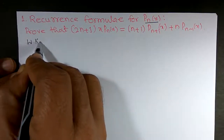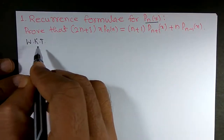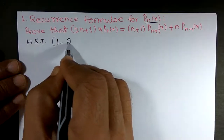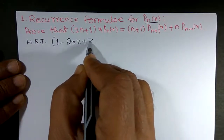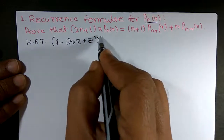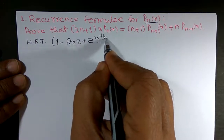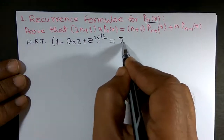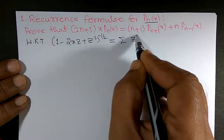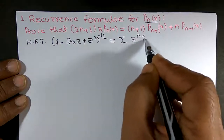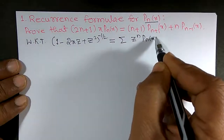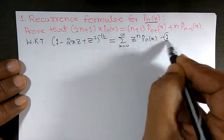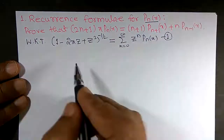We begin with the generating function. We know that (1 − 2xz + z²)^(−1/2) is equal to the summation of zⁿ·Pₙ(x) where n varies from 0 to infinity. We will call this equation number 1.